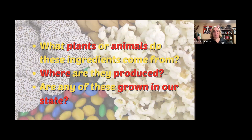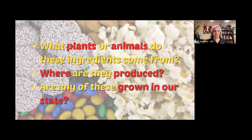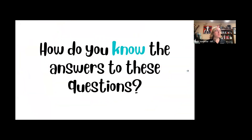Let's pick the beef jerky that someone wrote. For the sake of time, what plant or animal does the ingredient come from? Hopefully we landed on beef. Beef is produced all over — and did it come from our state? Beef is raised all over the United States. It could come from anywhere.